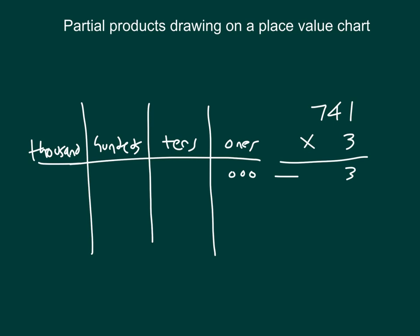We're looking at that first partial product of three times one one, so we have three ones. Draw an arrow in that direction. Next, our next partial product is three times the four, and that four is worth four tens. So three times four tens is twelve tens, which is also written as one hundred twenty — that is one hundred and two tens.